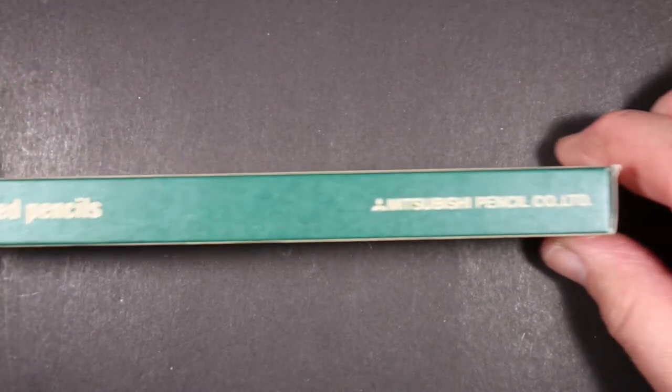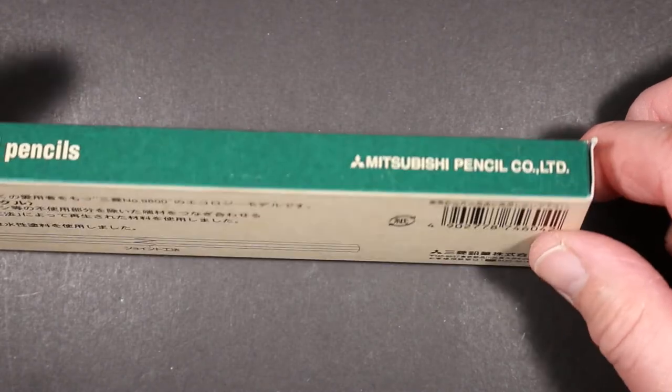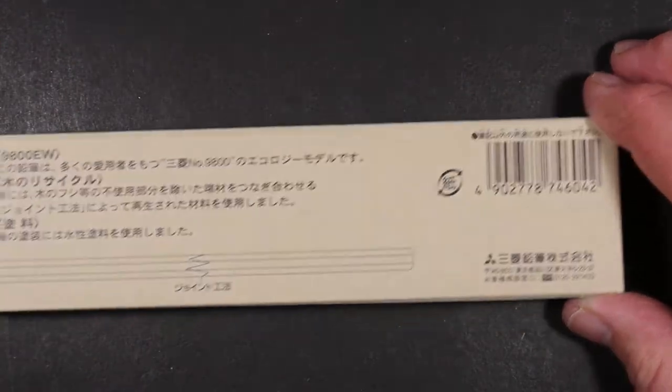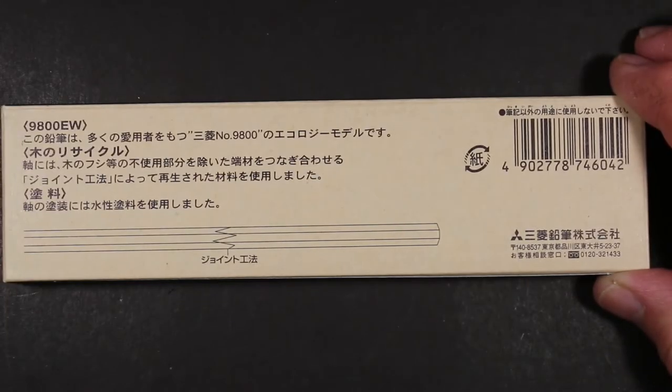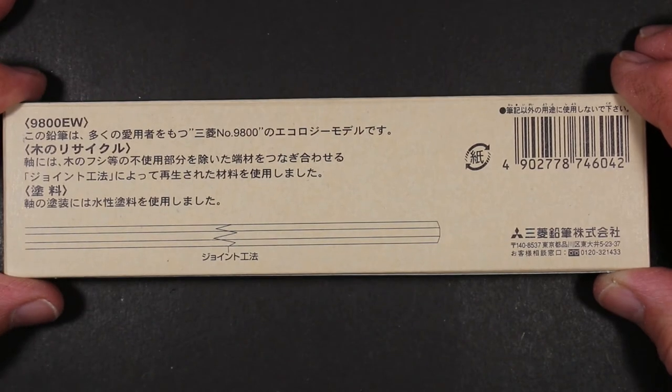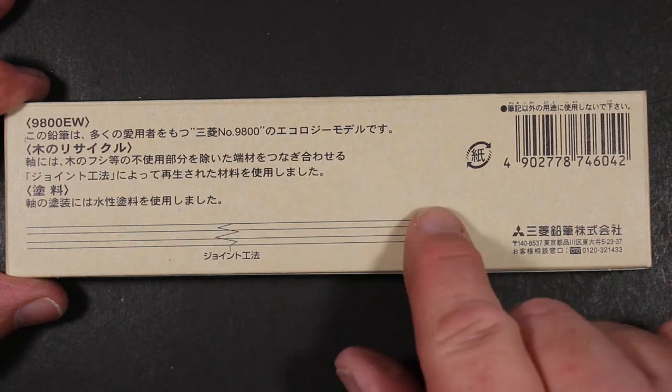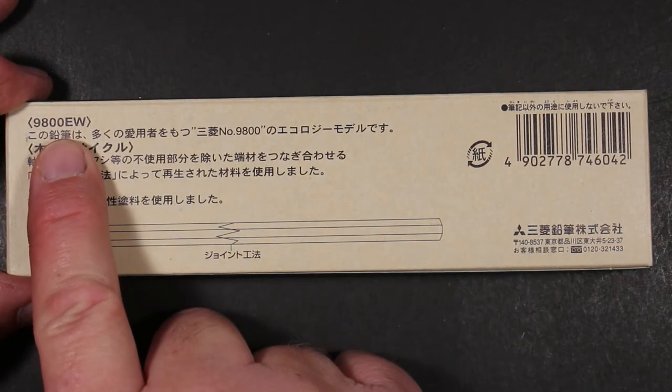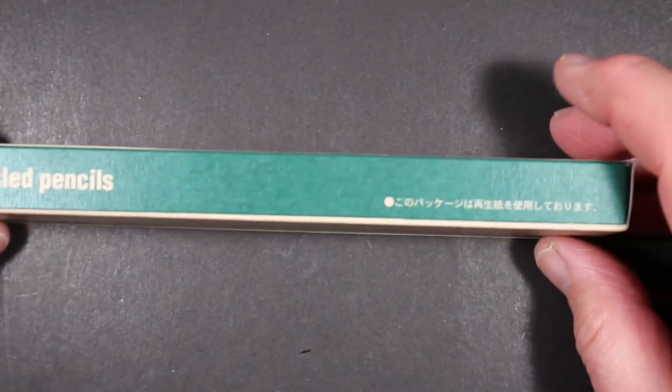Recycled pencils, Mitsubishi pencil company limited. Then on the back, well I can't tell you much what's on here because it's almost all in Japanese. So perhaps this says a lot of what's on the front, I don't know. But we see it's 9800 here EW. And on this other side we have recycled pencils.